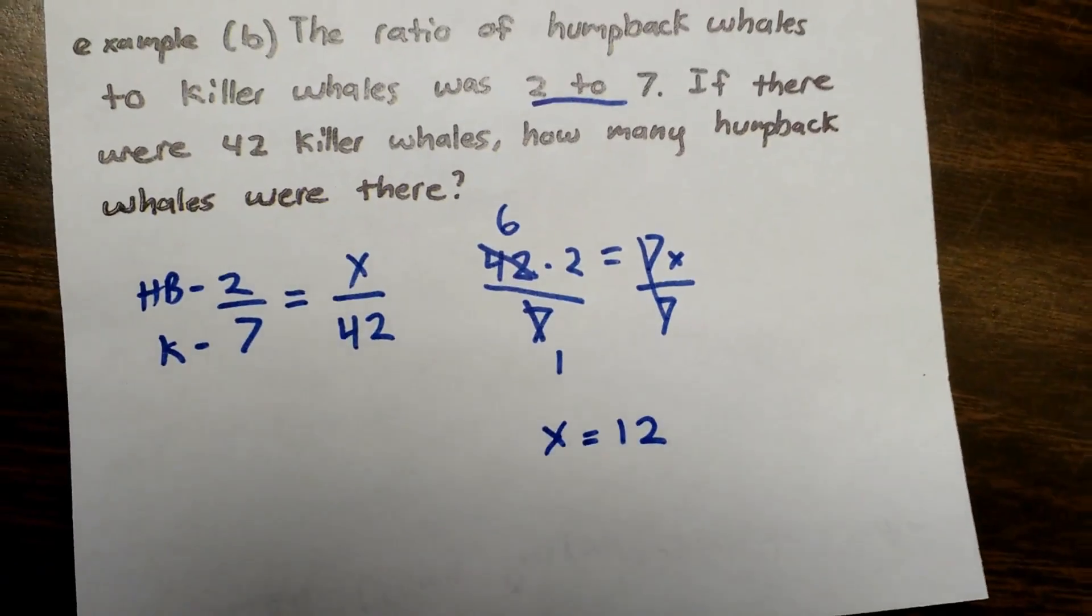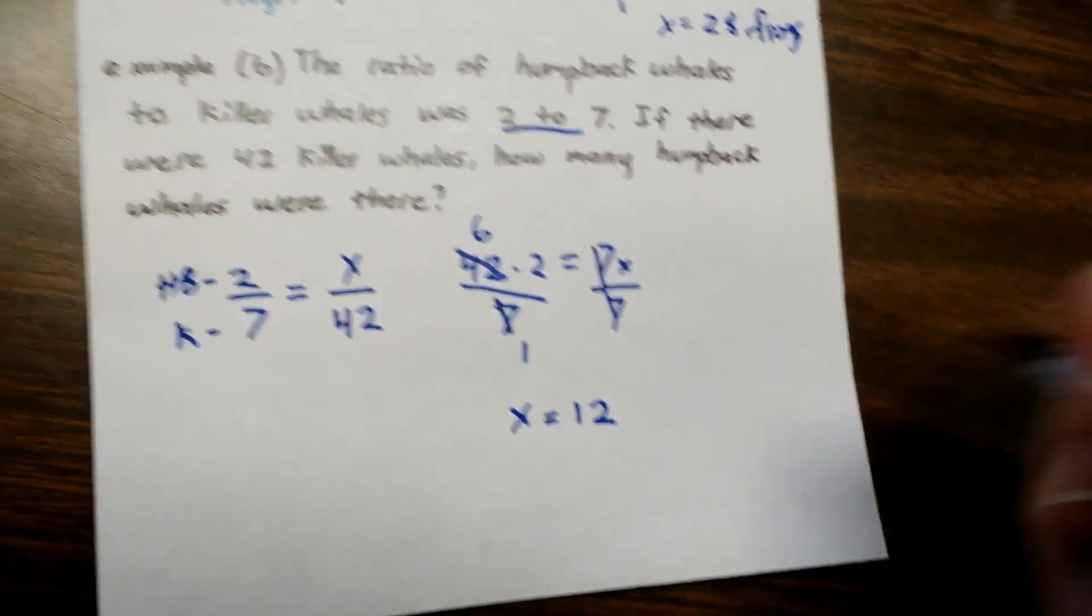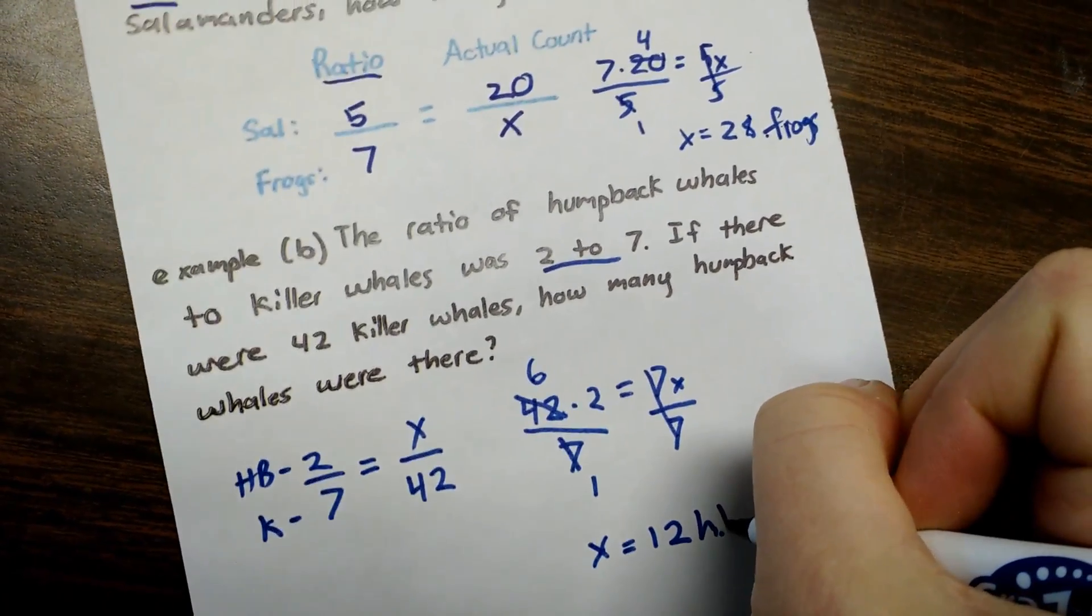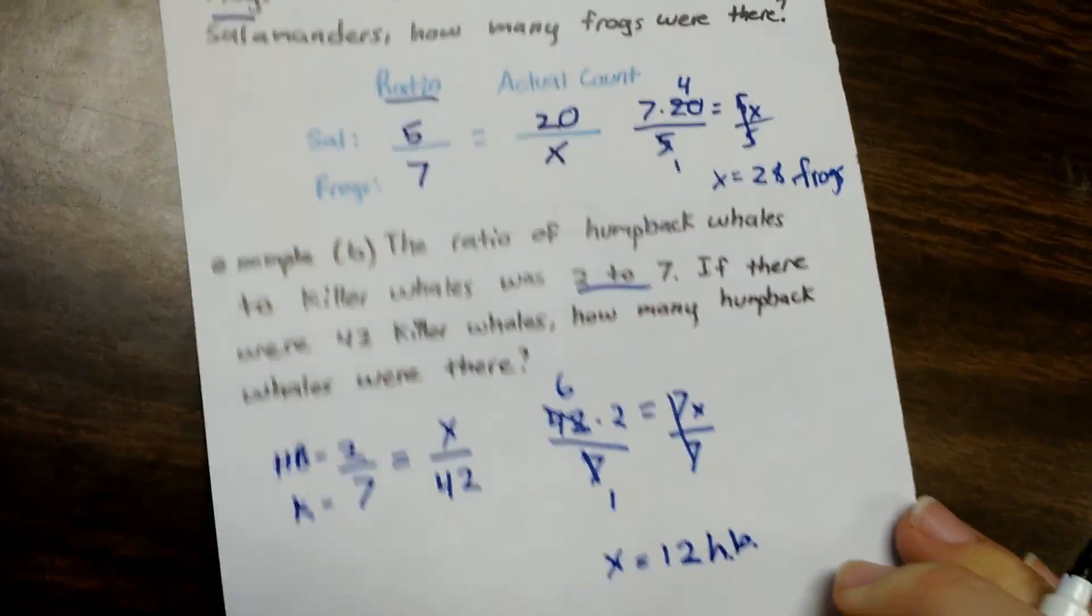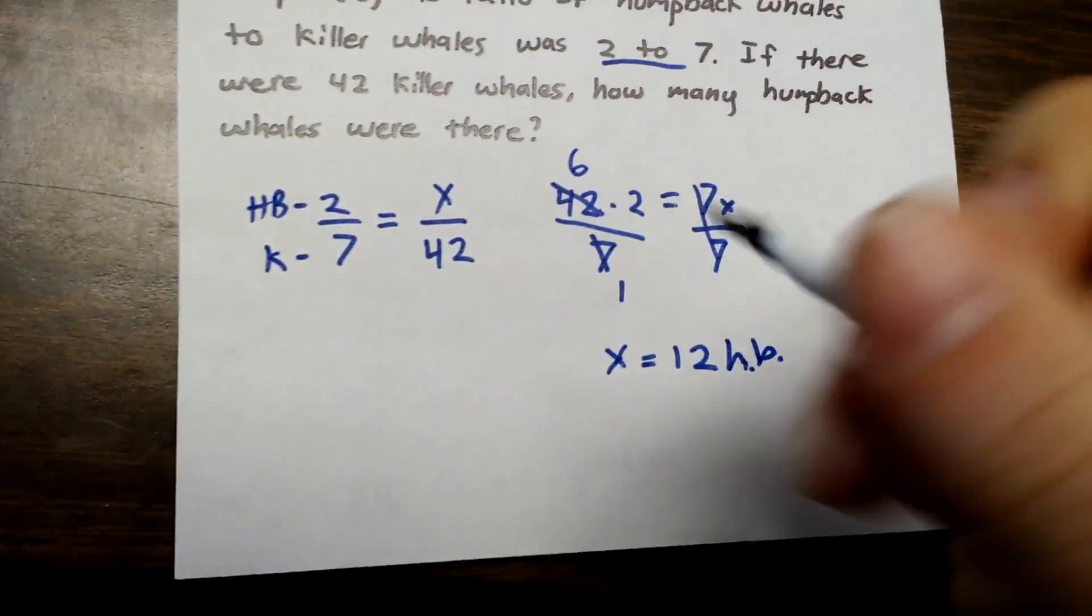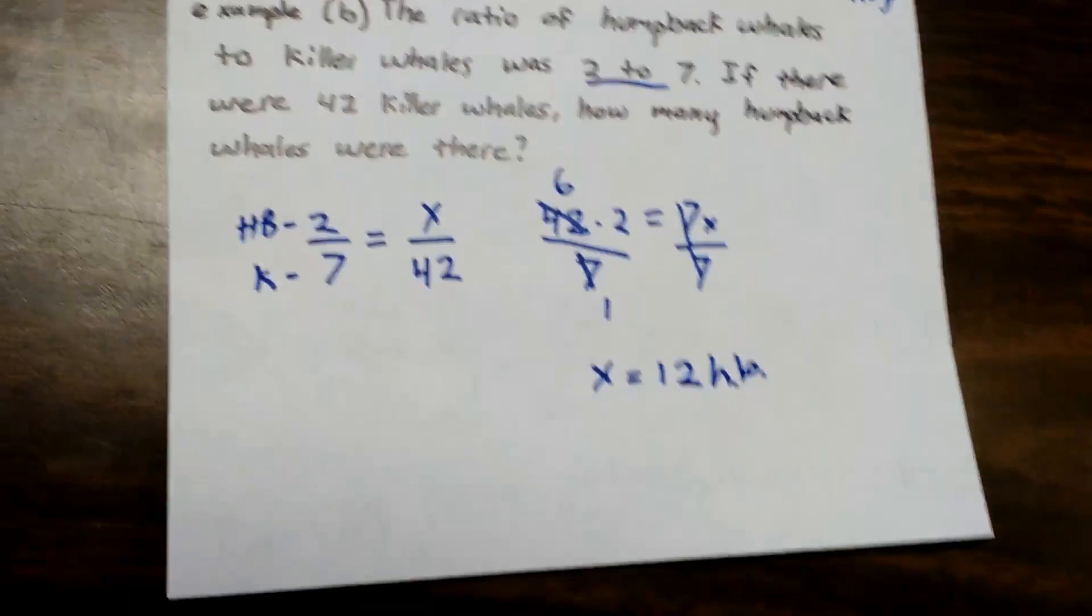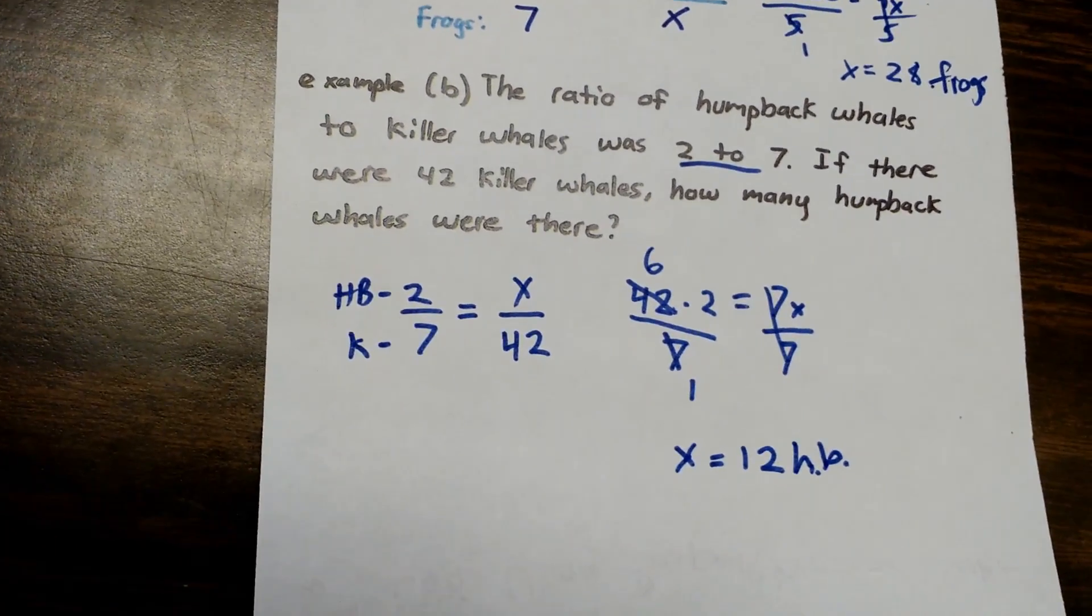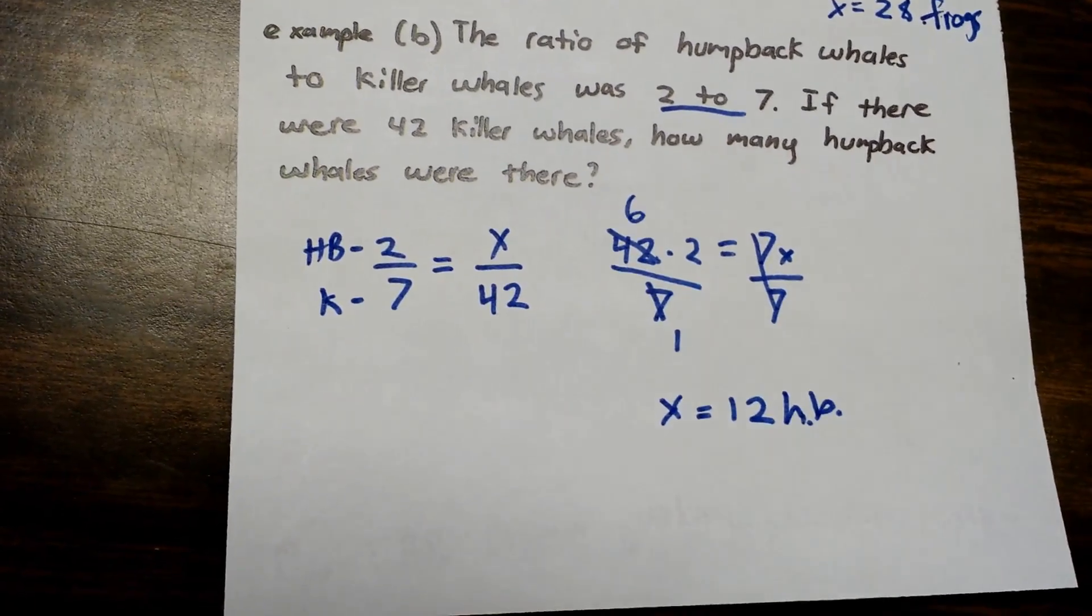And there you go. That means that there were 12 humpback whales. Oh my goodness. It is so hard to write and hold the phone at the same time. All right. This lesson hopefully makes a lot of sense to you. We will get a lot more practice in class tomorrow. Go ahead and get to work.